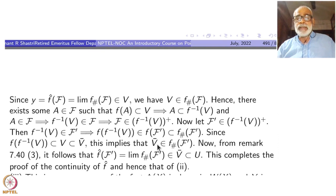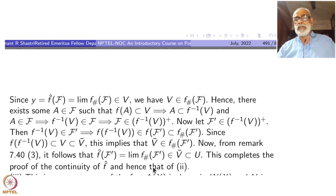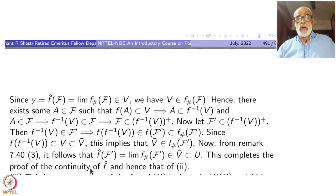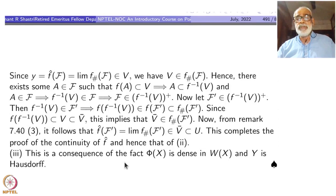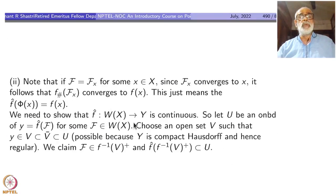For every V, if the limit point is inside V-closure and V-closure is inside U, this completes the proof of continuity of f-hat, and hence the proof of statement 2: the association defines a continuous function. The commutativity was already seen. Statement 2 is proved.